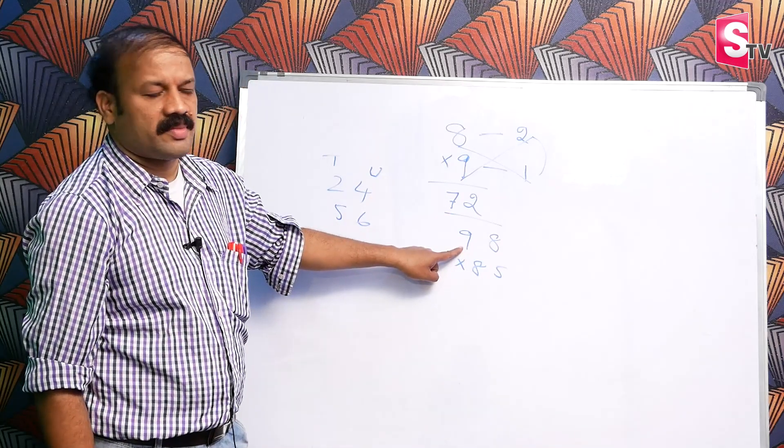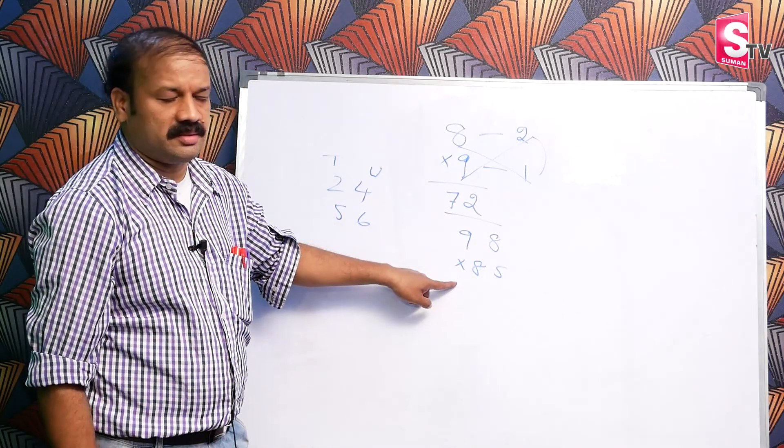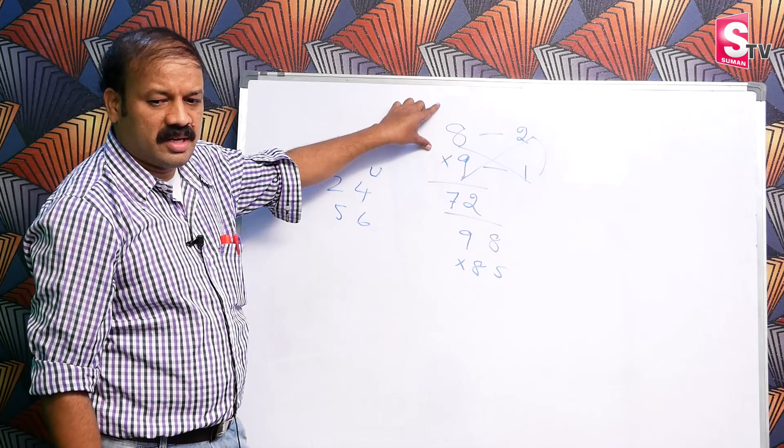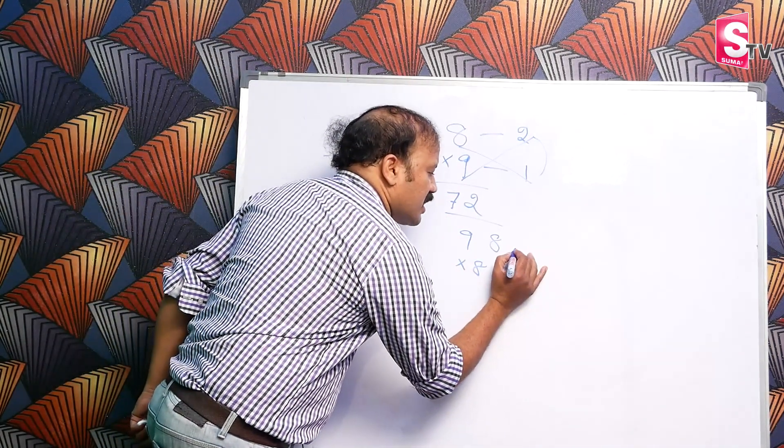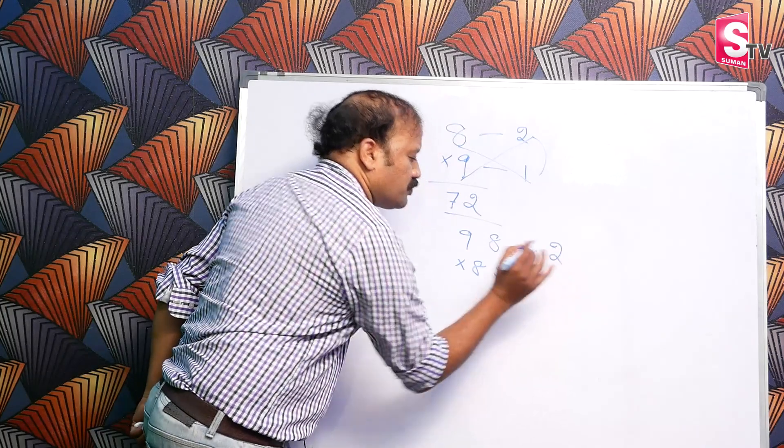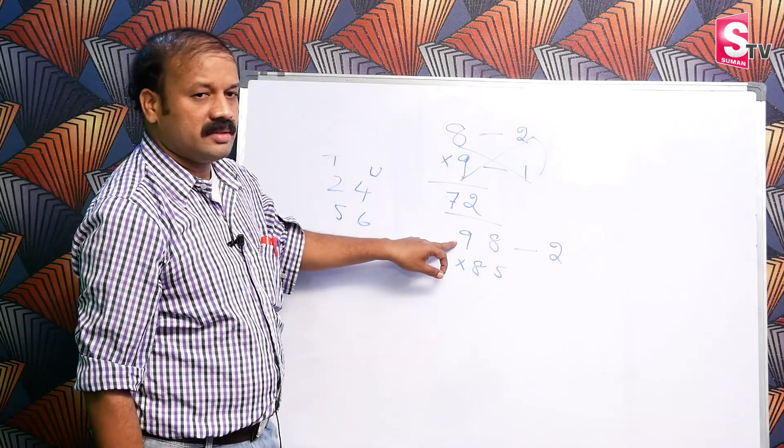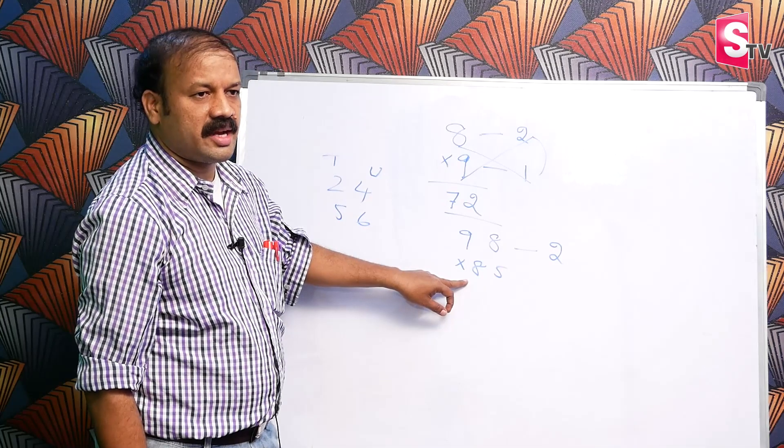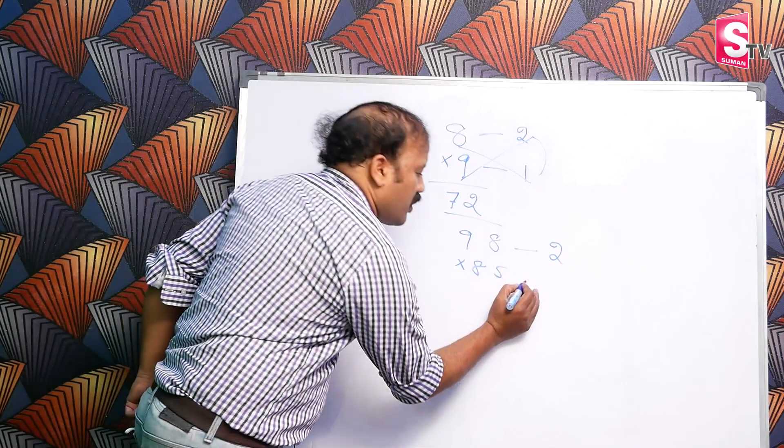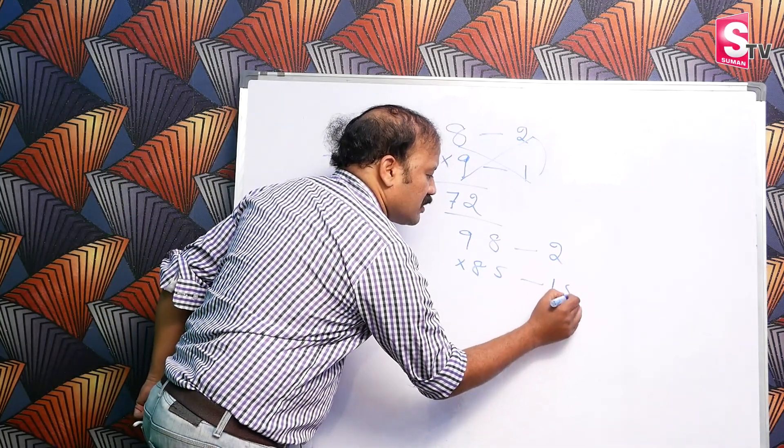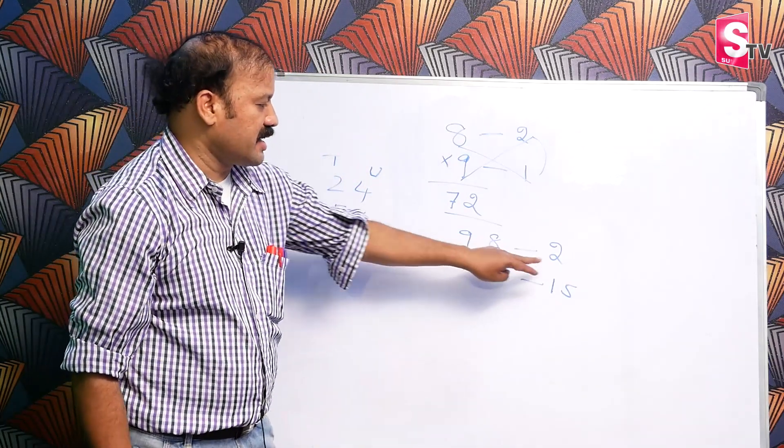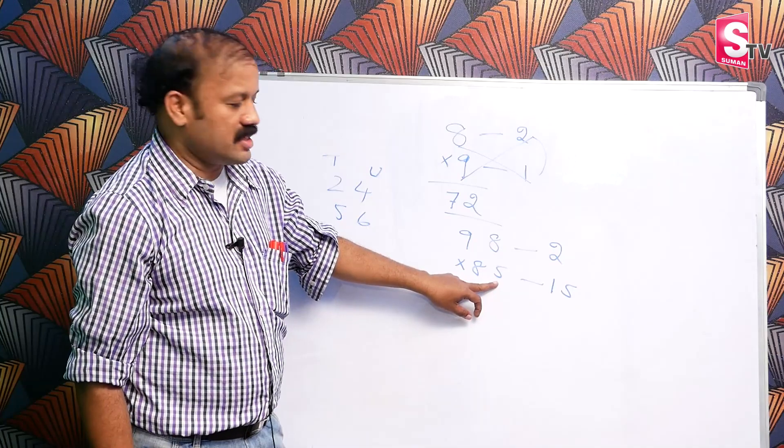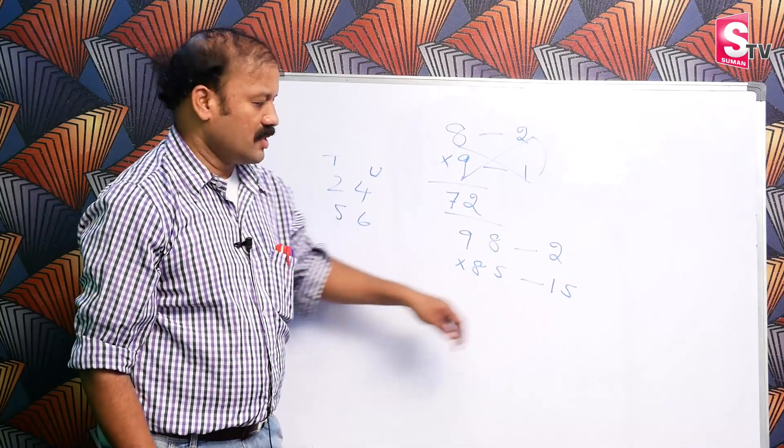The base is 100. 100 minus 98, that is 2. 100 minus 85, what is that? 15.